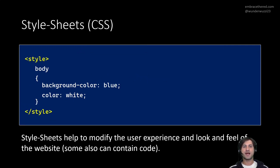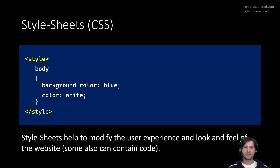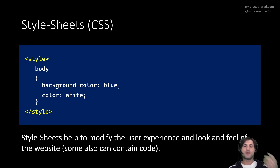Then we have style sheets, which describe how these elements should be rendered. For example, you could say the body HTML element should be rendered with a blue background and fonts should all be white by default everywhere on the page. This is the kind of behavior you can drive with style sheets.